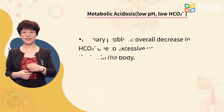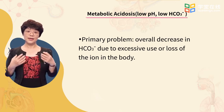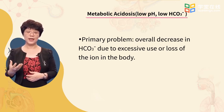Let's move to the second one: metabolic acidosis. Metabolic acidosis is characterized by low blood pH and low blood bicarbonate. The primary problem in metabolic acidosis is an overall decrease in bicarbonate due to excessive use or loss of this ion in the body — for example, severe diarrhea and renal failure. Clinically, we often encounter metabolic acidosis in conditions of excessive acid production, for example, lactic acidosis, diabetic ketoacidosis, etc.